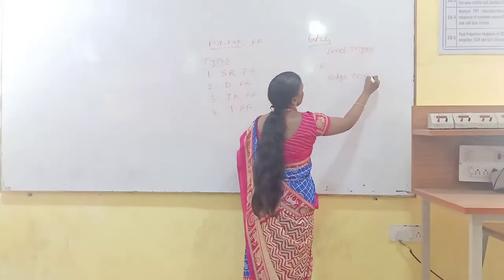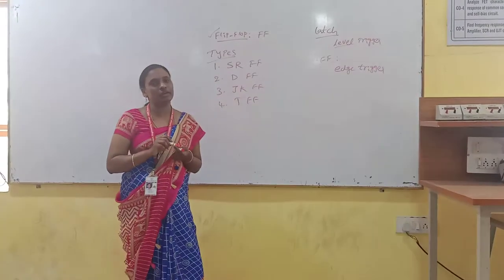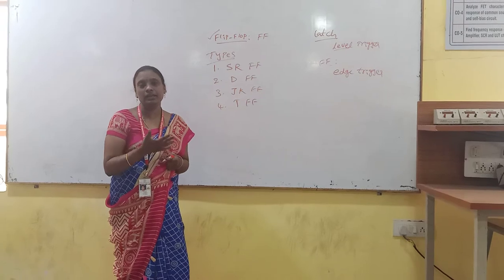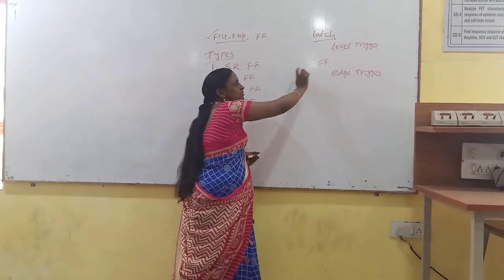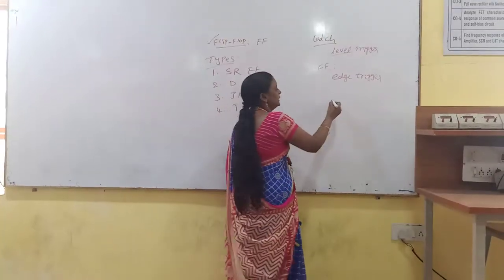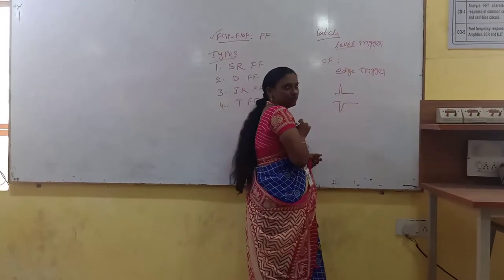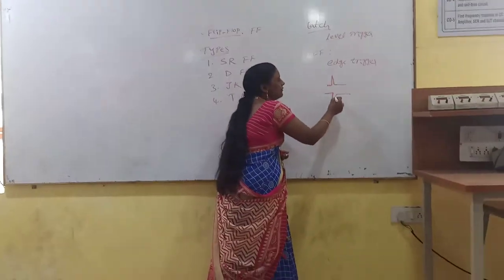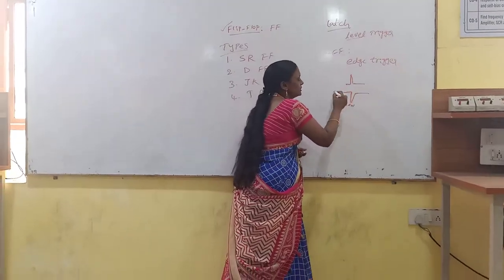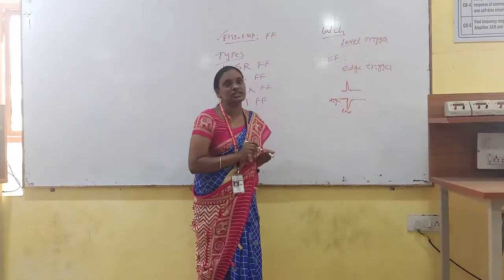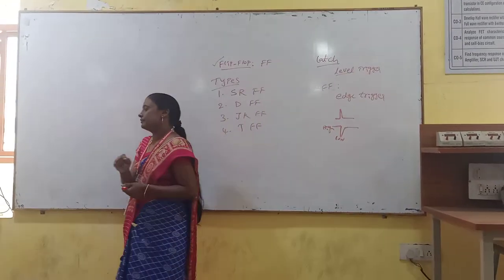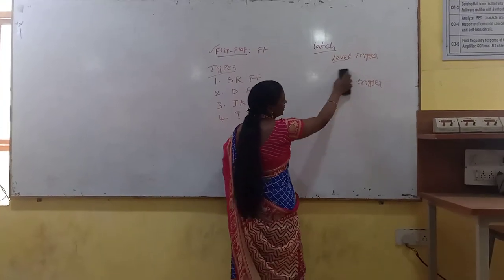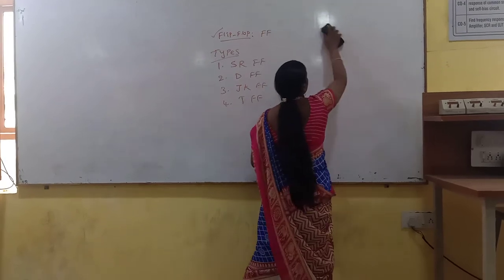Edge triggering means the flip-flop changes state on a specific edge of the clock. Level triggering may be a low level or high level. For the flip-flop we use edge triggering — either a positive edge or a negative edge. When the positive edge occurs, only then will the flip-flop change its state. Negative edge means a high-to-low level transition — at that time only the flip-flop will change its state. There are different types of triggering: level triggering, edge triggering, pulse triggering.